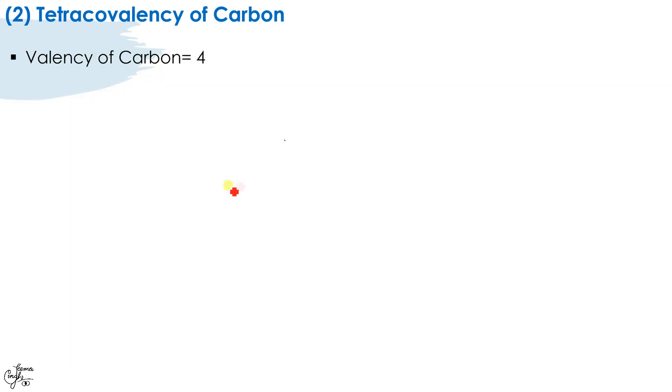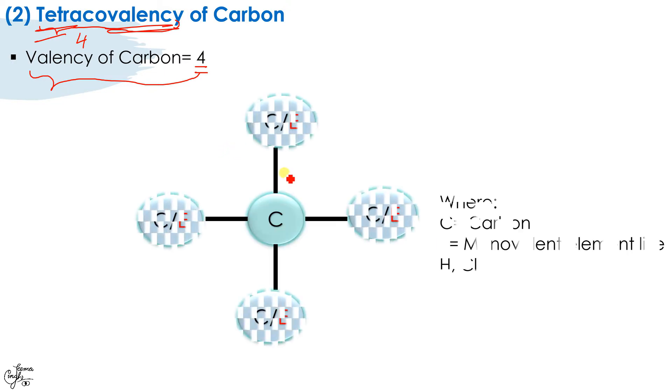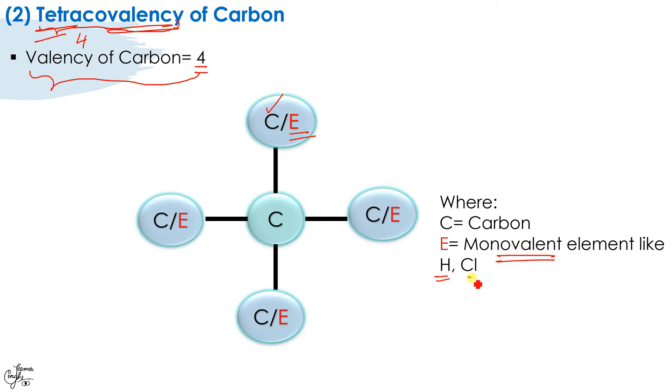Now moving on to the next property, that is tetracovalency of carbon. As the name suggests, tetra means four, covalency. Carbon forms covalent compounds and the valency of carbon is equal to four, that means it can share four electrons. Now with whom is it going to share electrons? This carbon is going to share electrons and form bonds with either itself, carbon, that self-linking, or any other element which is monovalent, for example hydrogen, chlorine, fluorine, etc.